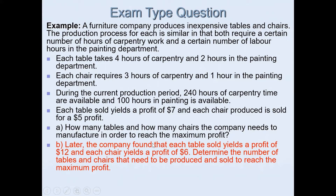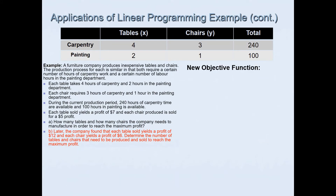Each table sold now yields a profit of twelve dollars, compared to the previous estimate of seven dollars. Each chair yields a profit of six dollars, compared to the five dollars predicted earlier. We want to investigate the effect this new objective function will have on the number of tables and chairs that need to be produced. We'll use information from the previous question to form the new objective function.